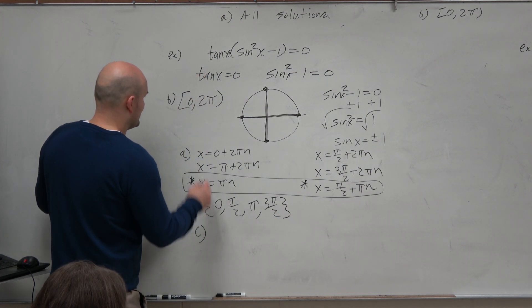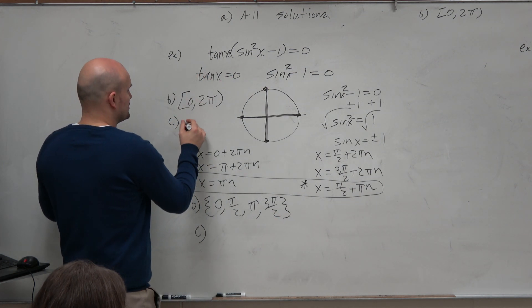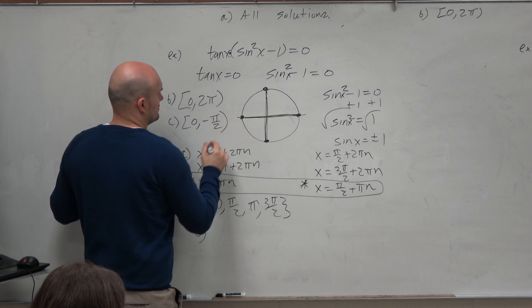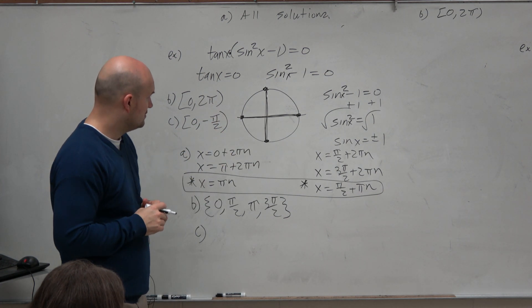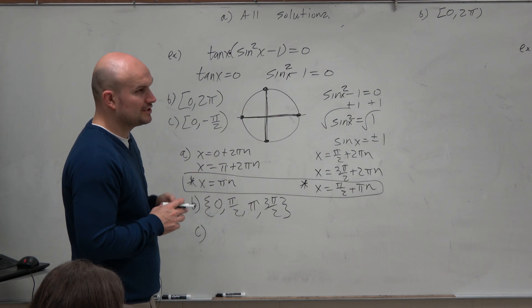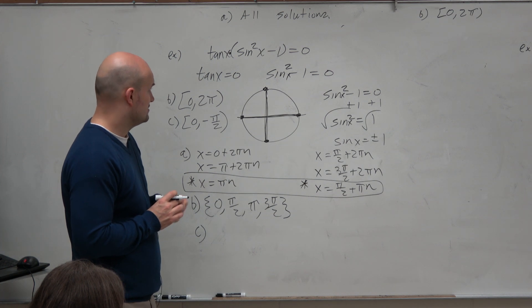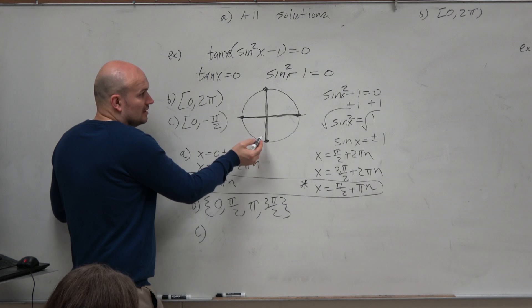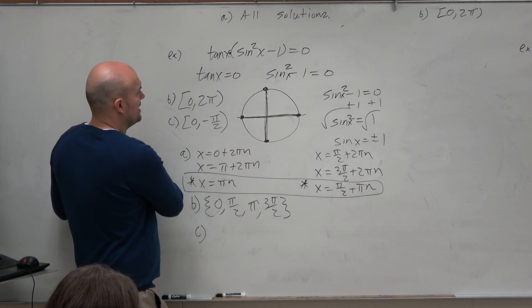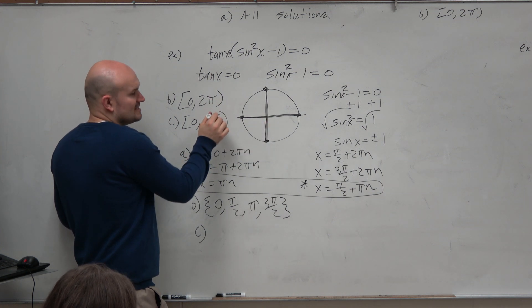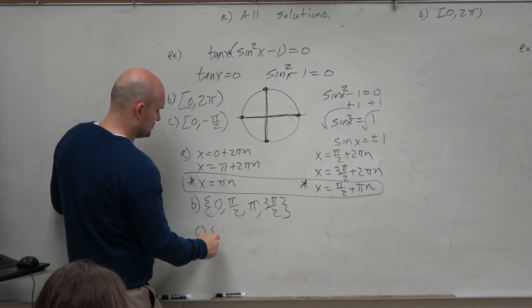And that's important when we look at C, which if you remember my restriction was 0 to negative π halves. So in this case, which of these angles satisfy between 0 and negative π halves? 0, right? You could do a negative π halves. All right, negative π halves. Negative. Yeah, negative π halves would be a solution, but it's not included. So therefore, the only solution here is 0.